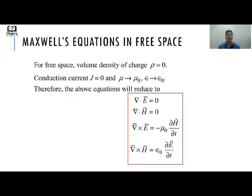For free space, the volume charge density ρ = 0, the conduction current J = 0, μ = μ₀, and ε = ε₀. So the above equations reduce to: div E = 0, div H = 0, curl E = −μ₀ ∂H/∂t, and curl H = ε₀ ∂E/∂t. These are Maxwell's equations in free space.